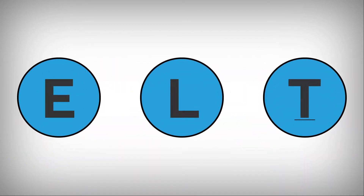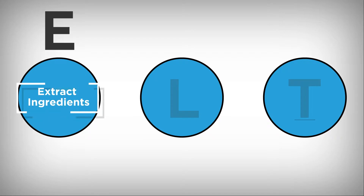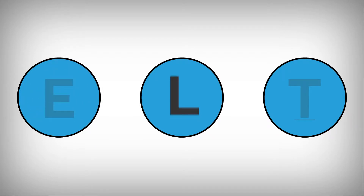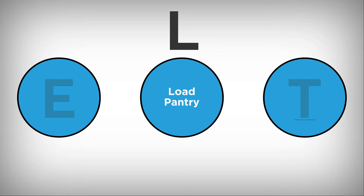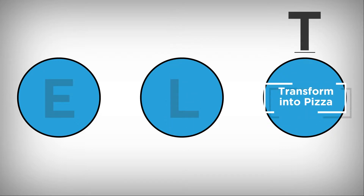To better define our analogy, the letters ELT stand for E — extract ingredients from the suppliers; L — load the kitchen or truck pantry with the ingredients; and T — transform ingredients into pizza.